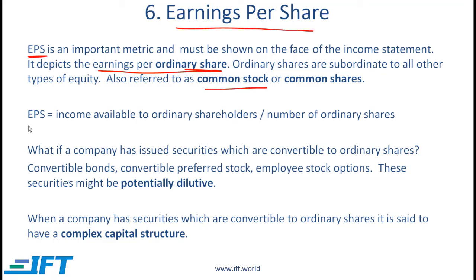In terms of a simple formula, we can say that EPS is equal to the income available to ordinary shareholders divided by the number of ordinary shares.